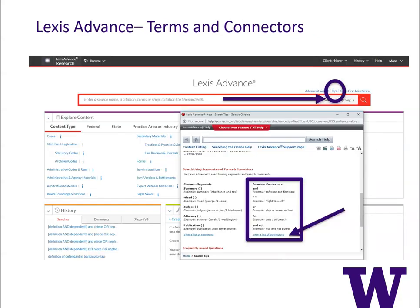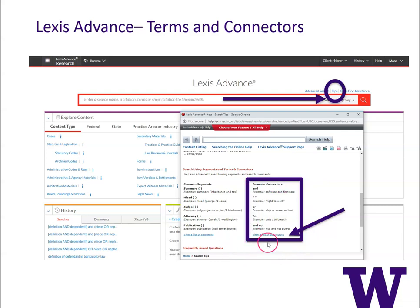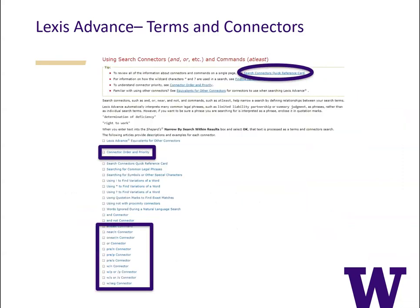To find out which connectors are available in Lexis, from the home screen select tips which is located just above the search bar on the right hand side. Selecting tips will pull up a new window and if you scroll down a bit you'll come to an area called search using segments and terms and connectors. For today we'll focus on using connectors. I've highlighted the most common connectors in Lexis but there's a link at the bottom that will take you to a list of all the other available connectors. Following the link takes you to a list of available information about how connectors work and which connectors are available. I recommend that you look at this quick reference card because that's going to take you to all of the connectors available in Lexis.